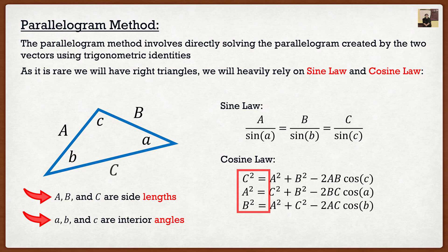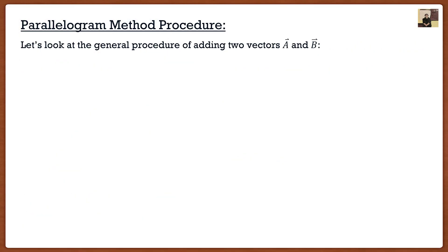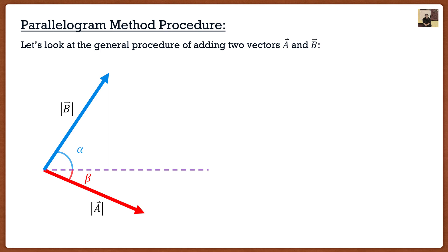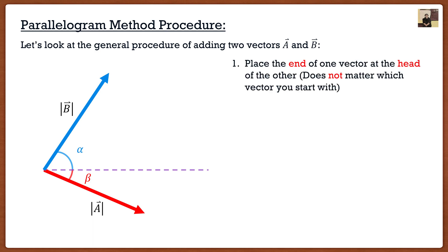Now let's do an example procedure of how exactly we use this method. Say the professor gives you vectors A and B, an angle vector B makes with the horizon, and an angle vector A makes with the horizon, and asks you to add them together. This is a very typical assignment or exam question. The first step is to create a triangle. We're going to use our trigonometric identities, so we need to take one vector and place it on top of the other — for this one, I'll take A and place it on top of B.